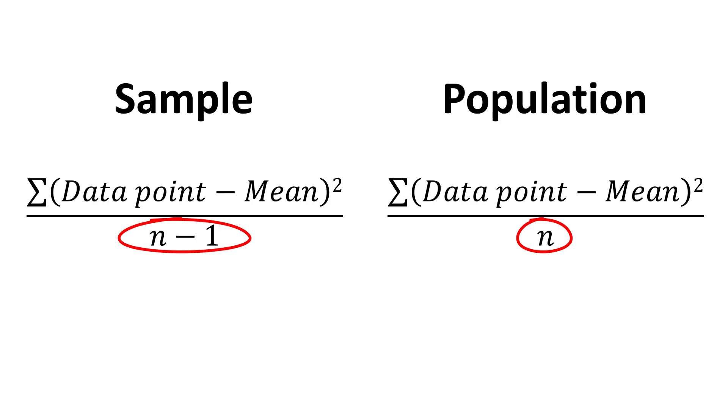Specifically when you calculate the variance of a sample you divide by n subtract 1, whereas in the population this is just n. This n subtract 1 is actually known in statistics as Bessel's correction. And it is used when calculating the variance of a sample in order to correct for some bias. So just keep this slight difference in mind when you are looking at calculating the variance.